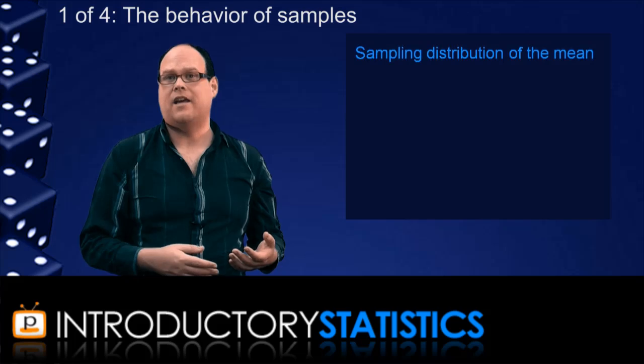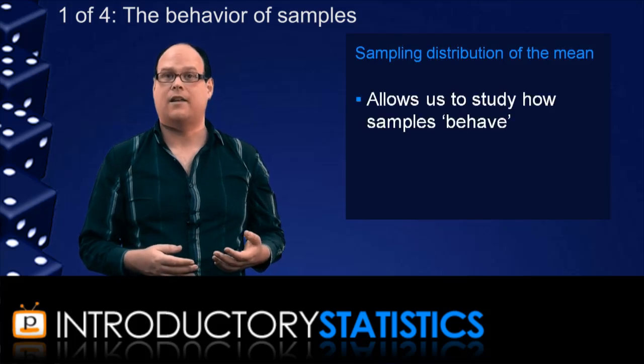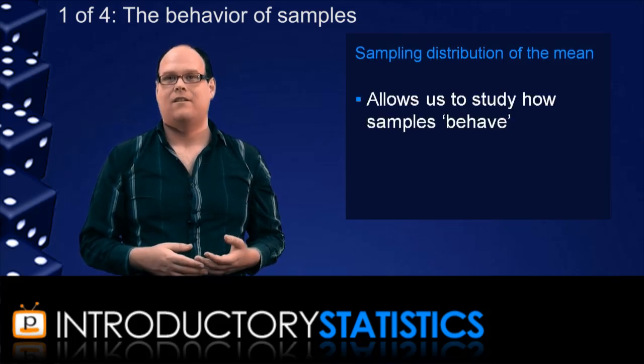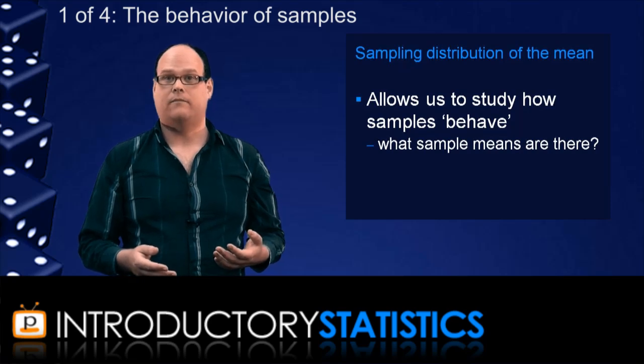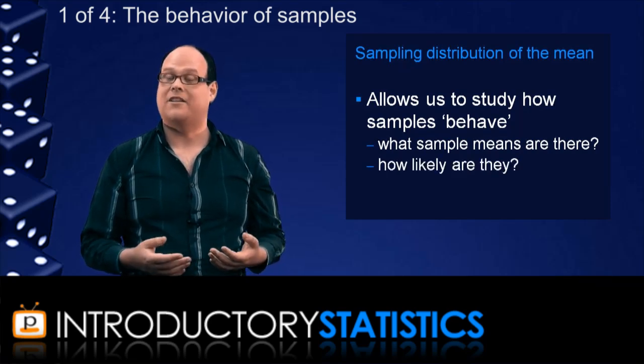In simple terms, what this means is that we're studying how sample statistics, like the sample mean, behave. What sort of sample means could you get from a population? How likely are they? How much do they vary?